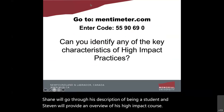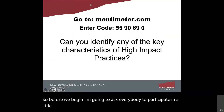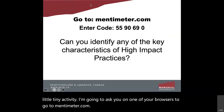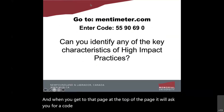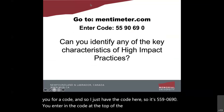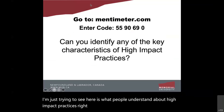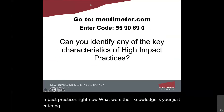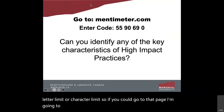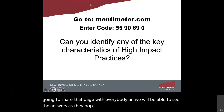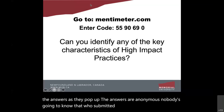Before we begin, I'm going to ask everybody to participate in a little activity. Go to mentimeter.com and at the top of the page it'll ask you for a code: 5590690. You'll be brought to an area where you can enter up to five different answers. I'm trying to see what people understand about high-impact practices right now. You're entering single words or a small phrase — there's a 25-character limit. The answers are anonymous.